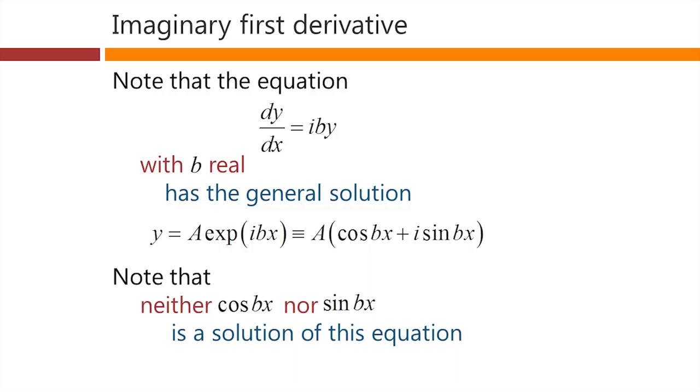Incidentally, although the exponential of ibx multiplied by an arbitrary constant is a solution of this equation, neither the cosine of bx nor the sine of bx is a solution of this equation. This equation has a solution that's sort of a complex oscillation, but an ordinary real oscillation is not a solution.